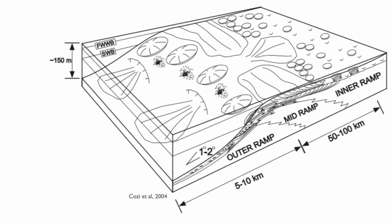We have a barrier in the mid-ramp that can break the energy of the wave, so we can distinguish the mid-ramp, outer ramp, and inner ramp. They're very similar in terms of their scale and their deposition. There are massive differences, of course, because we don't have any skeletal fragments — so no corals, sponges, or anything like this.